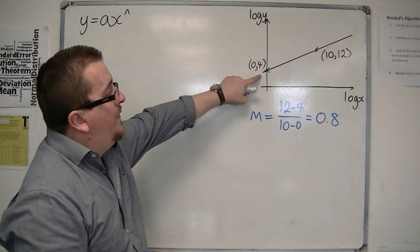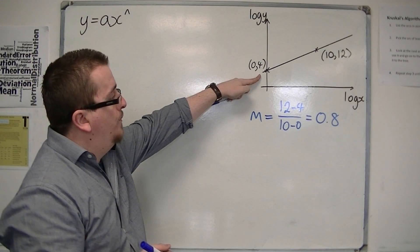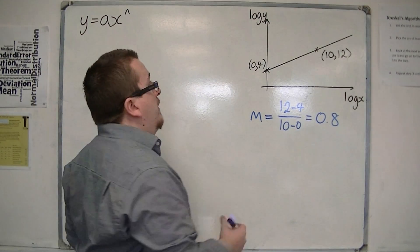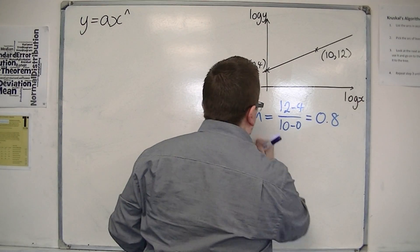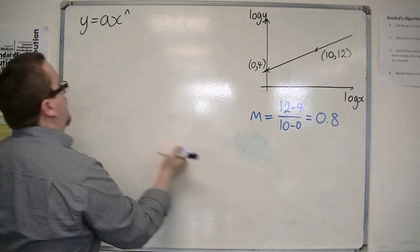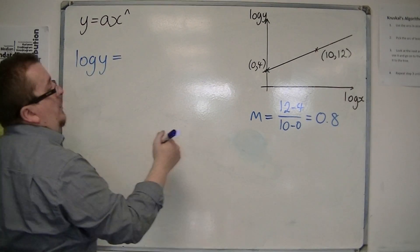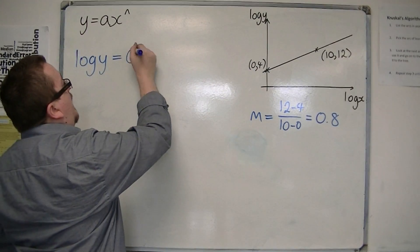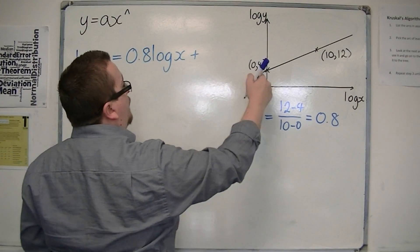I could also say that the value of the y-intercept will be 4. So that means that log y is equal to 0.8 log x plus 4.